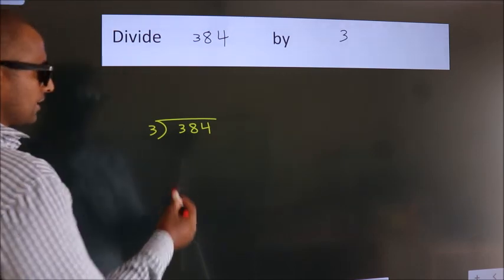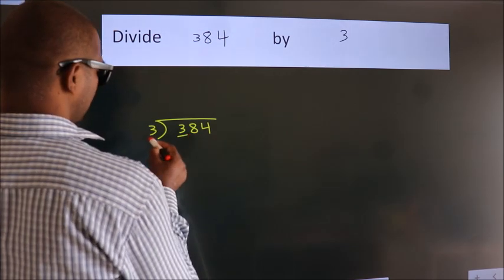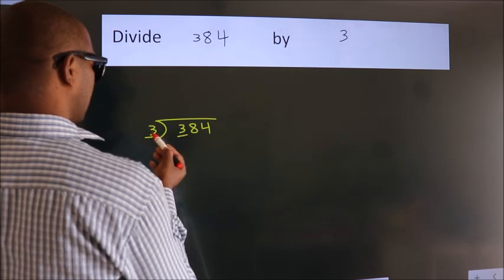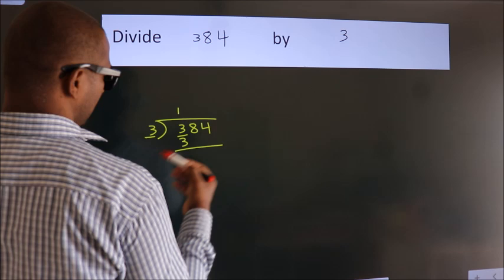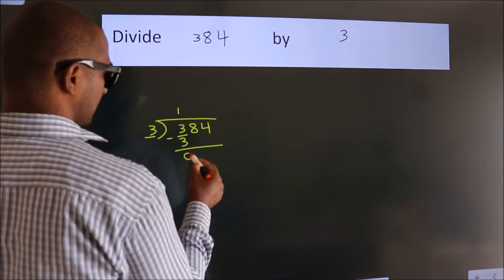Next. Here we have 3, here 3. When do we get 3? In 3 table. 3 ones is 3. Now, we should subtract. We get 0.